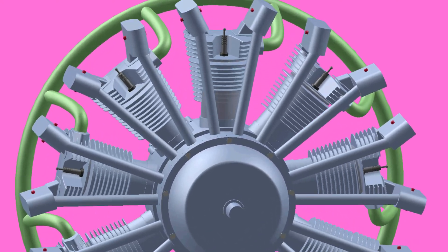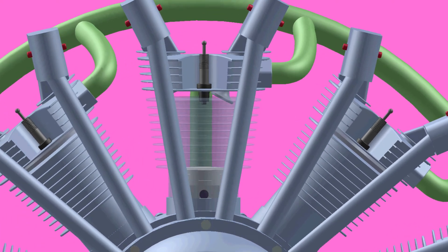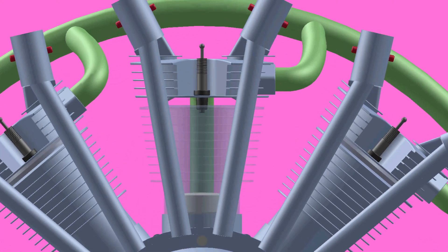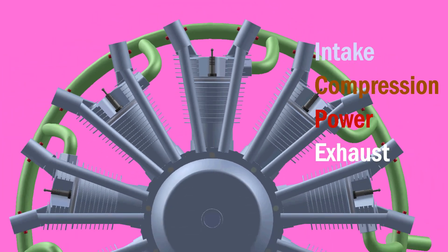The working of radial engine is similar to internal combustion engine. It has 4 strokes: intake, compression, power, and exhaust.